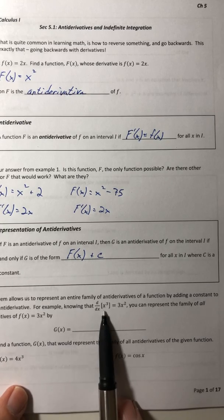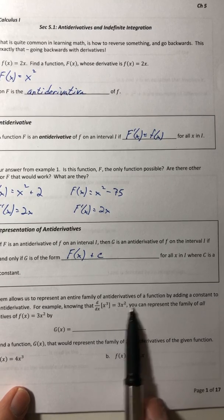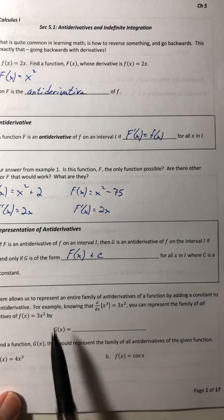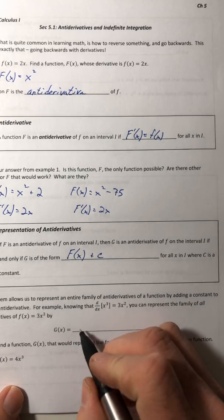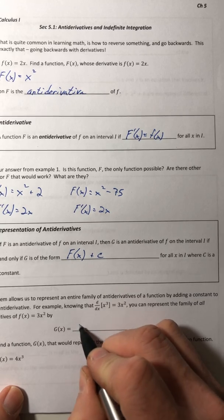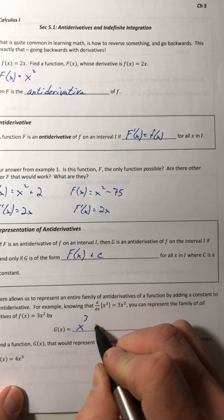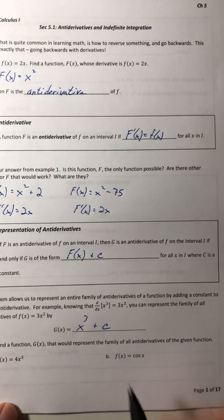So for example, knowing that the derivative of x to the third is 3x squared, you can represent the family of all anti-derivatives by letting g of x equal x to the third plus c.